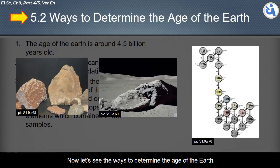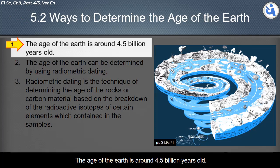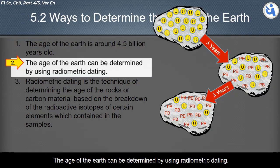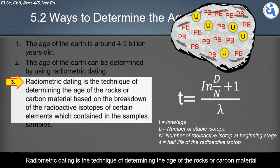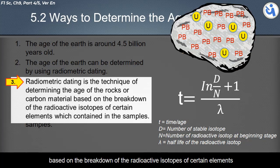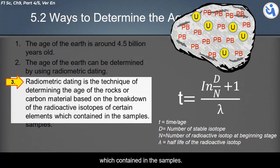Now let's look at the ways to determine the age of the earth. The age of the earth is around 4.5 billion years old. The age of the earth can be determined by using radiometric dating. Radiometric dating is the technique of determining the age of rocks or carbon material based on the breakdown of radioactive isotopes of certain elements contained in the samples.